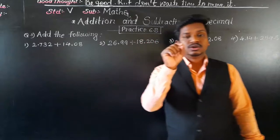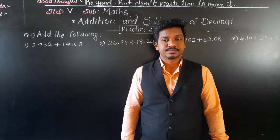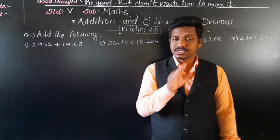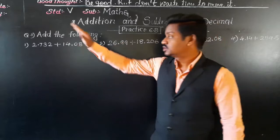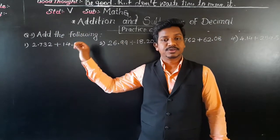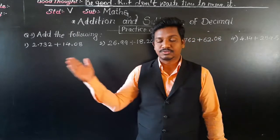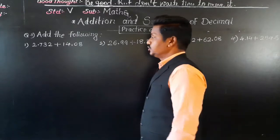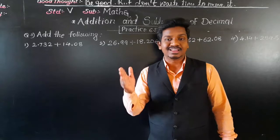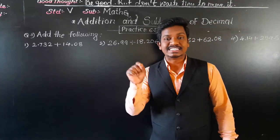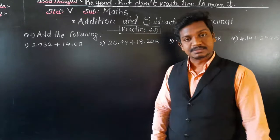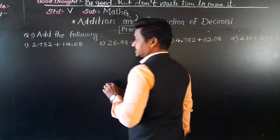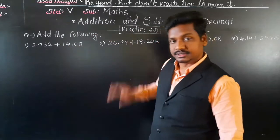It is very easy. Just one precaution you have to take. When we have two decimals and we are doing addition or subtraction, if they are unlike decimals — unlike decimals means if their decimal places are not the same — then first we have to make their decimal places equal, that is, we have to make them like decimals before adding or writing vertically. We do this by putting zeros at the end to balance the decimal places. For example, 2.732 has 3 decimal places and 14.08 has 2 decimal places, so we add one zero at the end of 14.08 to make it 14.080.